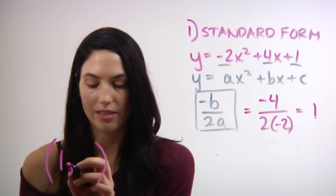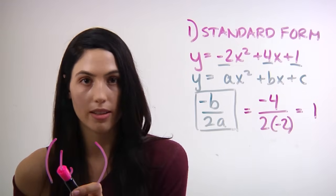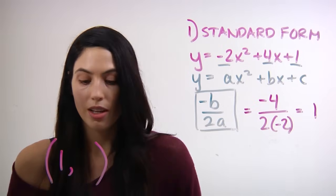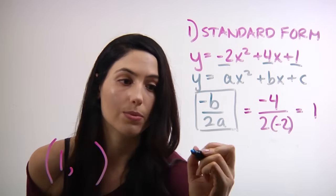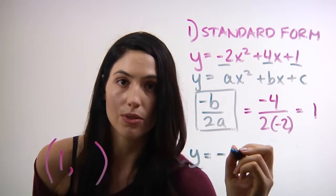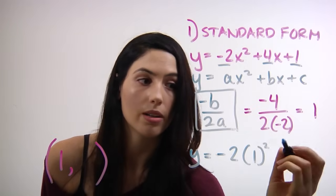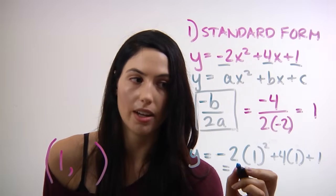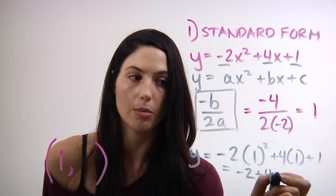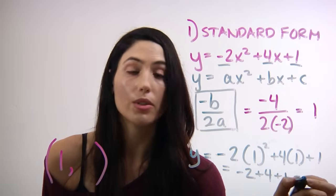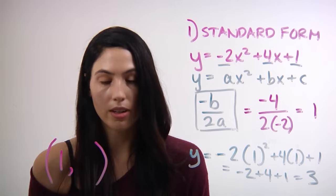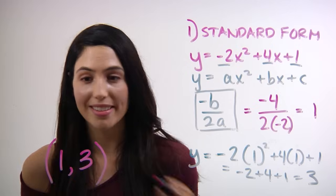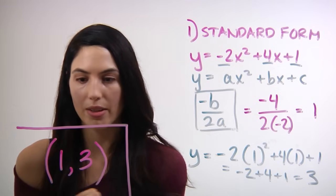That was actually the hard part. All you have to do is take that 1, that x, and plug it in for x in your original equation. So here, y equals negative 2 times 1 squared plus 4 times 1 plus 1, which simplifies to negative 2 plus 4 plus 1, which equals 3. So now you know that the y-coordinate in your vertex is 3.